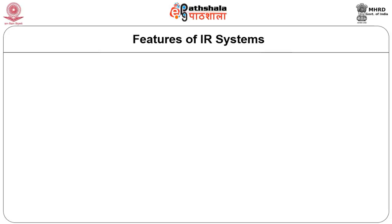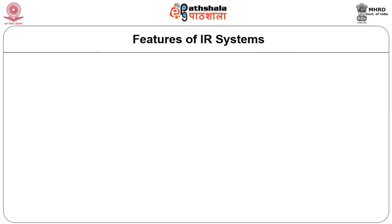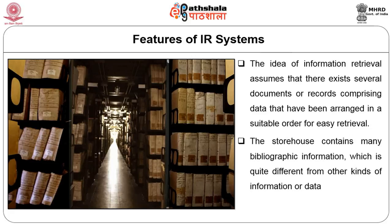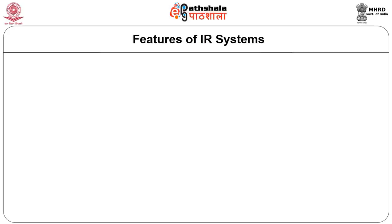An information retrieval system is developed to help users discover information relevant to their needs, generally from a storehouse or large collection of documents. The idea of IR assumes that there exist several records or documents comprising data that have been arranged in some suitable order for easy retrieval. The storehouse contains many bibliographic information which is quite different from other kinds of data. Here we are describing the traditional IR system and mostly the bibliographic retrieval system. Also, when we talk about conventional database management systems such as Accessor, Oracle or MySQL, these deal with structured data where the arrangement is based on specific attributes of the data element.